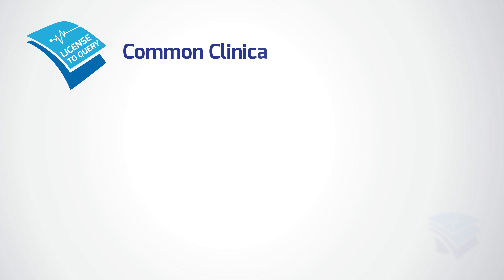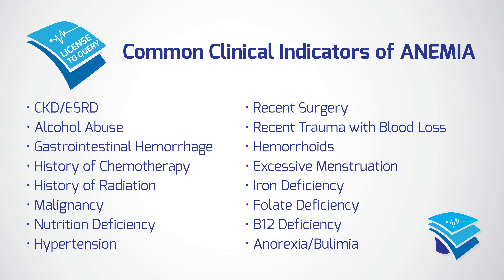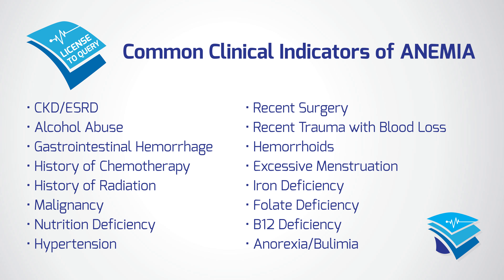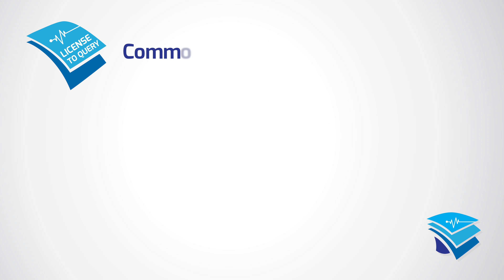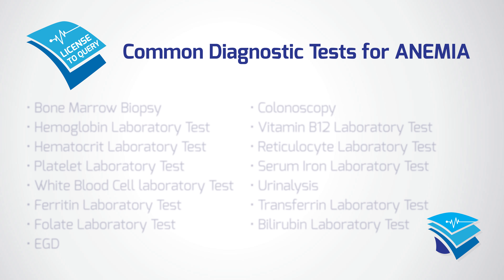Common clinical indicators of anemia include chronic kidney disease, alcohol abuse, gastrointestinal hemorrhage, history of chemotherapy, history of radiation, malignancies, nutrition deficiency, hypertension, recent surgeries, recent trauma with blood loss, hemorrhoids, excessive menstruation, iron deficiency, folate deficiency, B12 deficiency, and anorexia or bulimia.